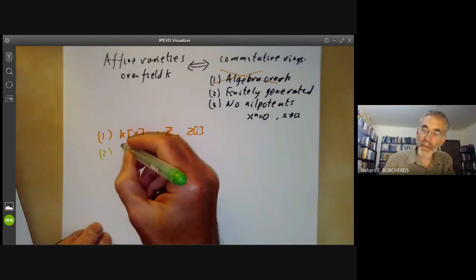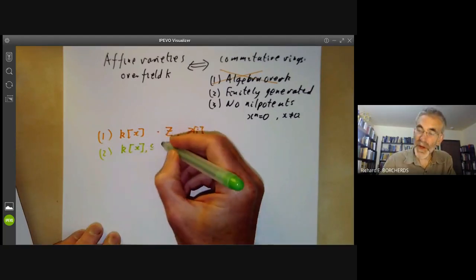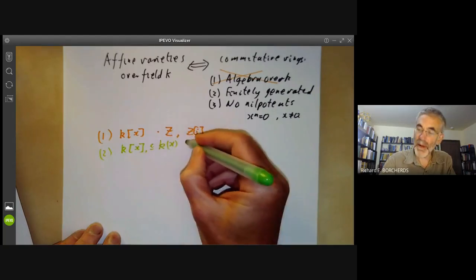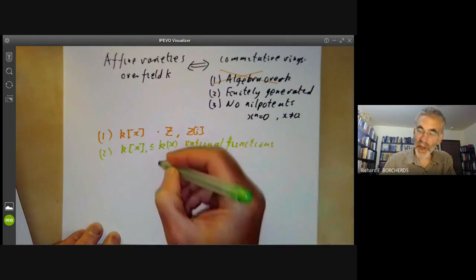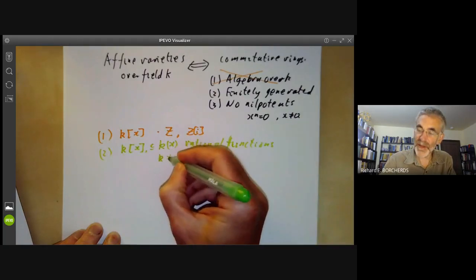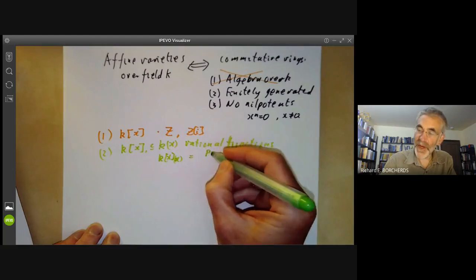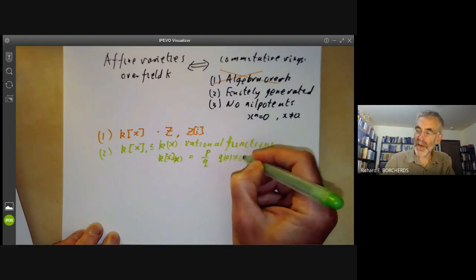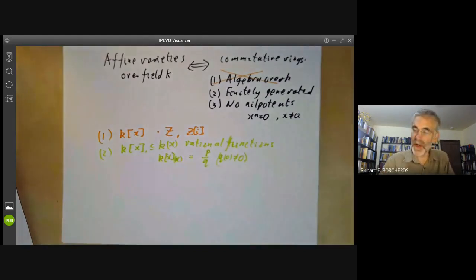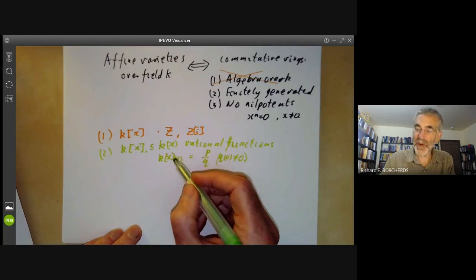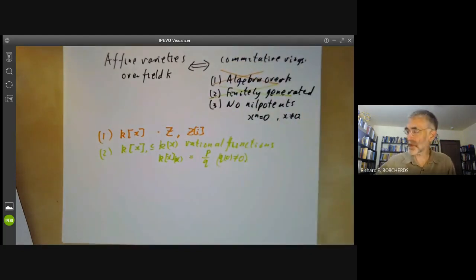Secondly, looking at the affine line and its coordinate ring, we might also want to look at the field of all rational functions on the line. Another useful thing to look at is a local ring such as K[X] localised at the ideal of the point X, which consists of all rational functions of the form P over Q with Q(0) not equal to zero — rational functions defined at zero. These local rings are very useful, but the problem is they are not finitely generated over K. So maybe we should delete the second condition too.